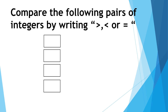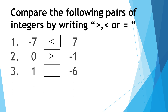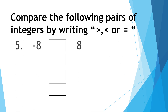Compare the following pairs of integers by writing greater than, less than, or equal. Number one: negative seven and positive seven — negative seven is less than positive seven. Number two: zero and negative one — zero is greater than negative one. Number three: one and negative six — one is greater than negative six. Number four: negative four and positive two — negative four is less than positive two.